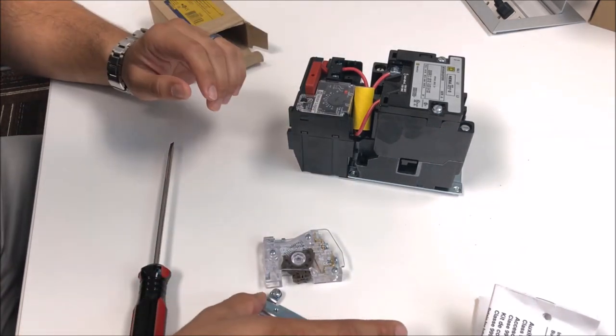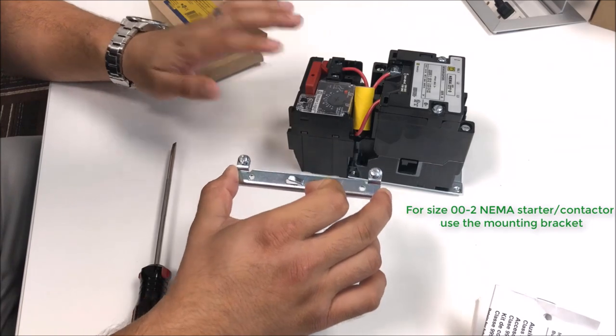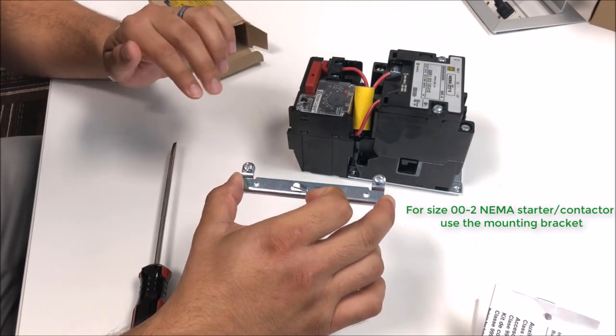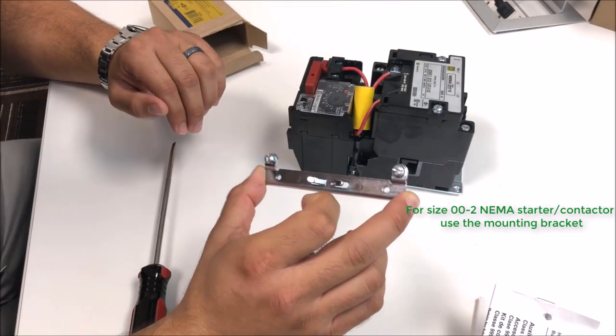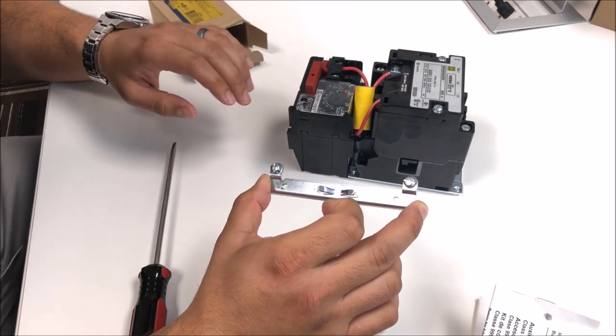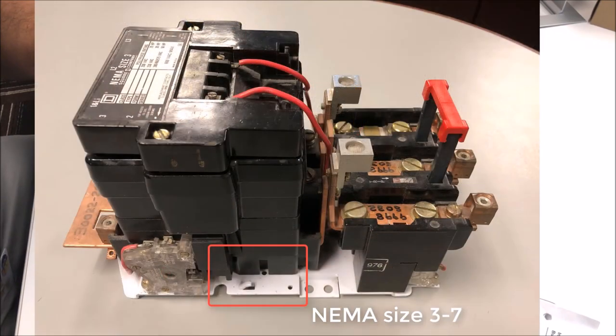To mount these using the mounting plate, for a size double aught to size two you'll use the mounting plate that comes with the prepackaged auxiliary kit. On a size three through seven, the mounting plate itself actually has them built into the device.